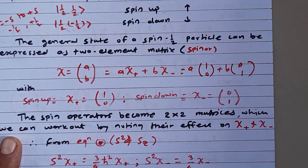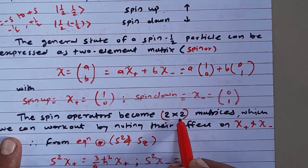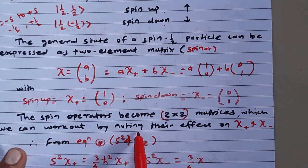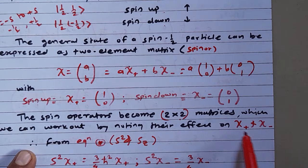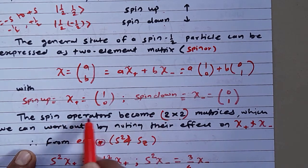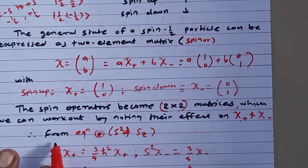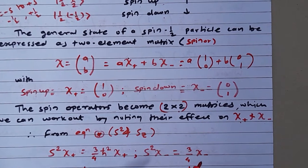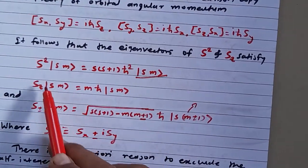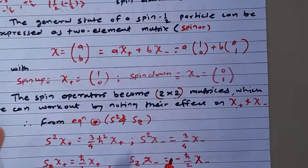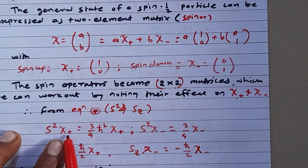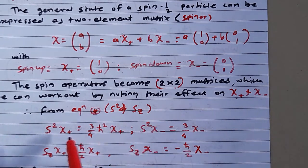If we operate the spin operators on this, they become 2×2 matrices, which can be worked out by noting their effect on χ-plus and χ-minus. From the equations for S² and Sz that we have seen, when S² operates on χ-plus (the spin-up particle), we can find its eigenvalue.